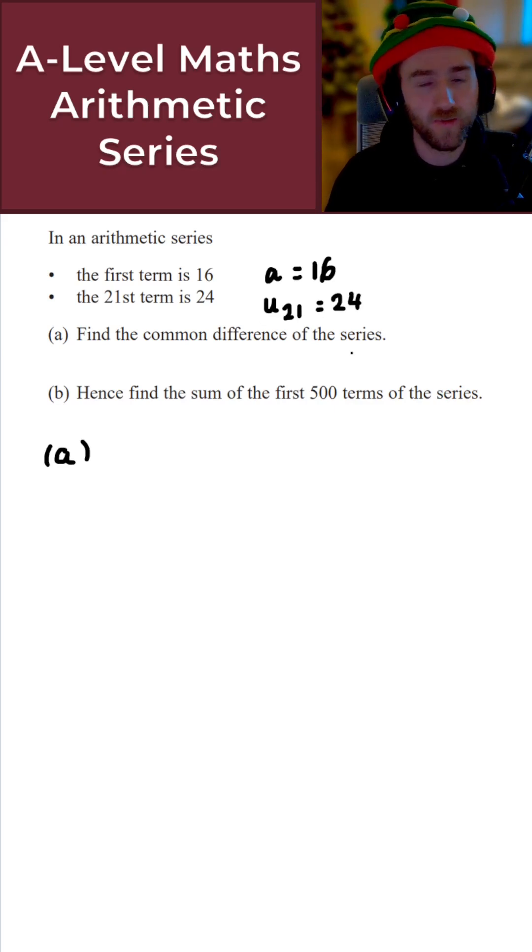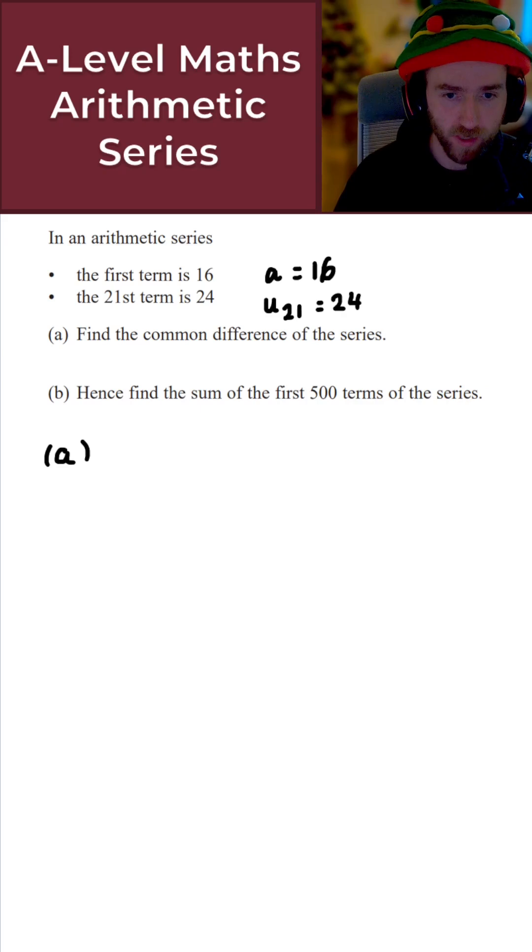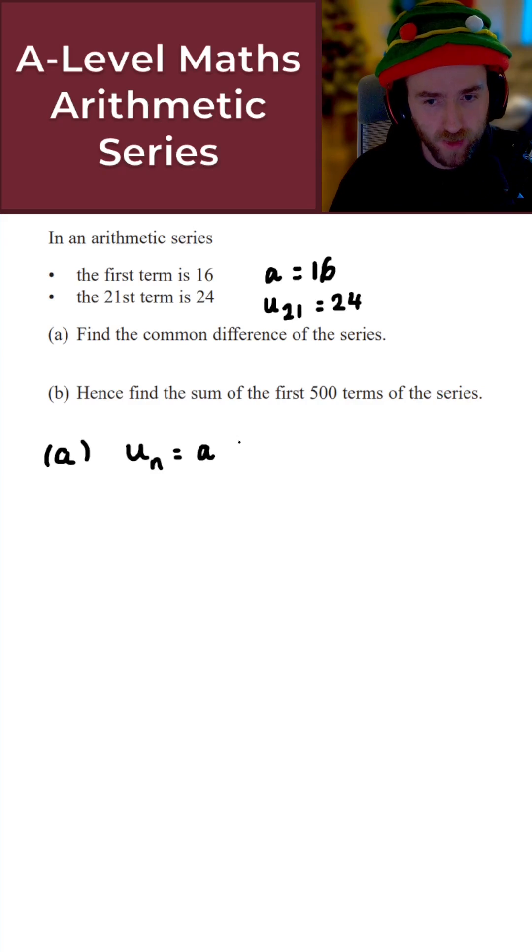Let's just put all of this together to find the common difference of the series. Now you should be aware that the nth term for an arithmetic series, so that's uₙ, is equal to a plus n minus 1 times d.